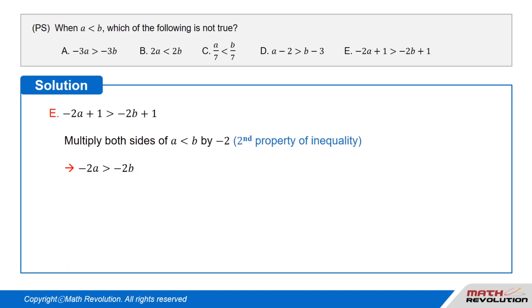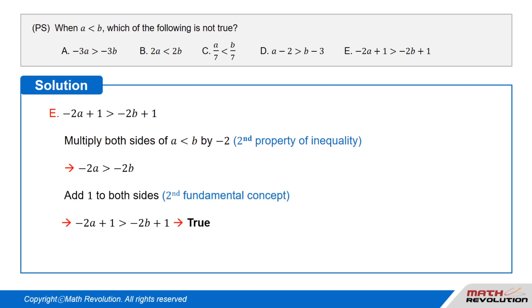Option E: negative 2 times a plus 1 is greater than negative 2 times b plus 1. Let us apply the second property of inequality, which is the negative rule. That is, when we multiply an inequality by a negative number, the inequality sign changes. So if we multiply a is less than b by negative 2, we get negative 2 times a is greater than negative 2 times b. Now, if we add a positive number to both sides of an inequality, the sign does not change. Thus, negative 2 times a plus 1 is greater than negative 2 times b plus 1. Thus this option is true.